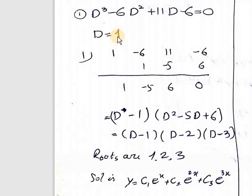Now I will use the method called synthetic division, which is at the college level. I will try the method in short. Put D = 1 on the side. This 1 is the D value. Write the equation coefficients: D³ coefficient is 1, D² is -6, D is 11, and the constant is -6. Draw the line.